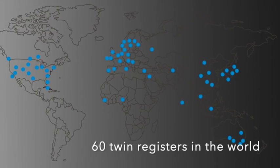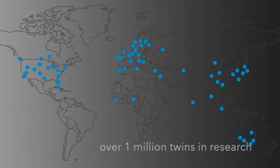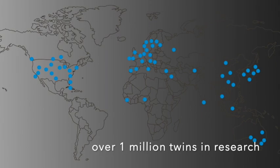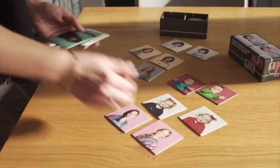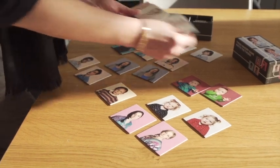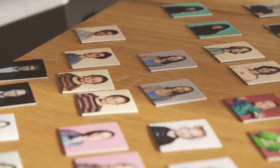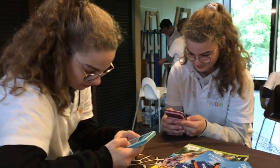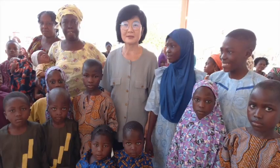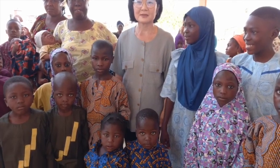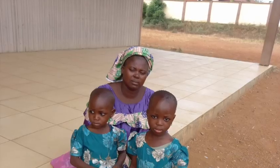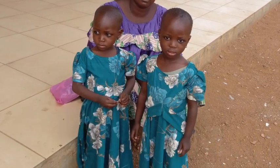More than 60 twin registers with over a million twins collect data worldwide. They continue to provide information on new phenotypes such as internet addiction or susceptibility to COVID-19. Did you know that the heritability of internet use is 41%? New twin registers are being established around the globe to study underrepresented populations in African, Arab, and other non-European countries.